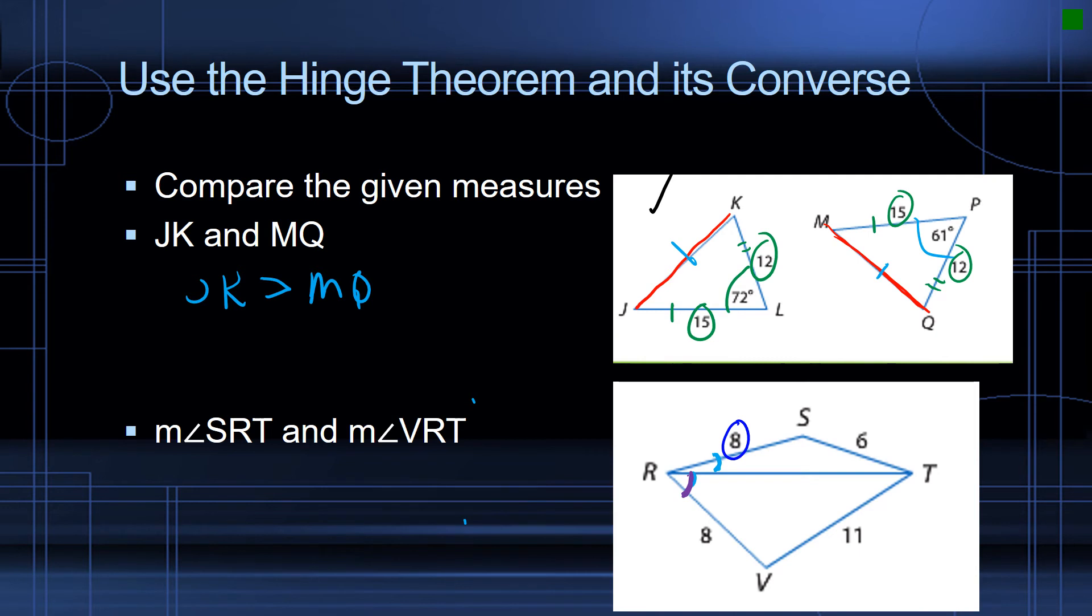And the other adjacent angle on VRT is also 8. So this is congruent, this is congruent. And of course, this side here is going to equal itself in the case of both triangles.